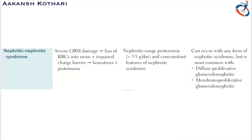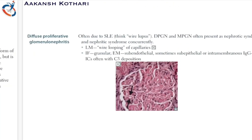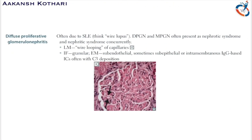Nephritic-nephrotic syndrome can occur in multiple forms. The two most common forms are diffuse proliferative glomerulonephritis and membranoproliferative glomerulonephritis. Diffuse proliferative glomerulonephritis is majorly associated with SLE — systemic lupus erythematosus — and it is specifically related to type 4 lupus. This is very important.